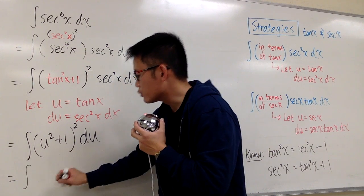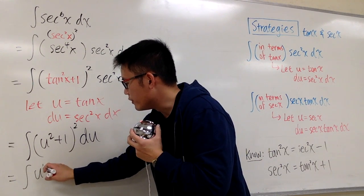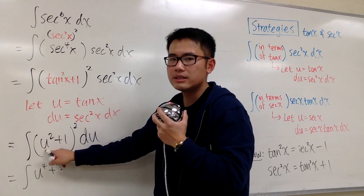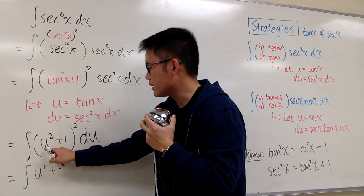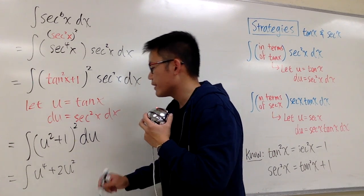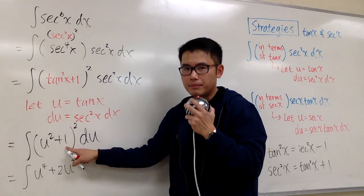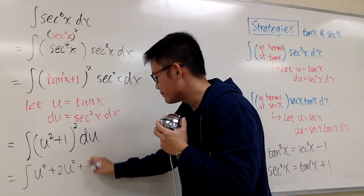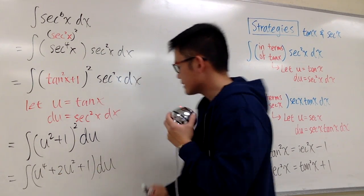The formula says, I square the first one, which will be u to the 4th power, and then add it with 2 times this times that. So we have 2 times u square times 1, so that's just 2u square. At the end, I add the square of this, which is just 1 square, which is just 1.